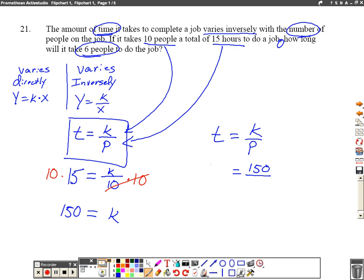And it says here that we have six people. How long will it take, so we don't know t, we don't know time. Will it take six people? So we're going to be plugging in our six for our p-value. And what we get is one fifty divided by six, which when we put in our calculator we get twenty-five.